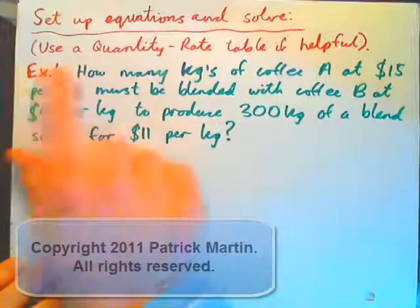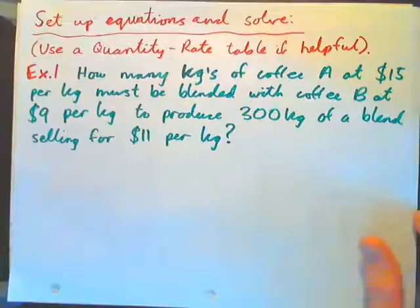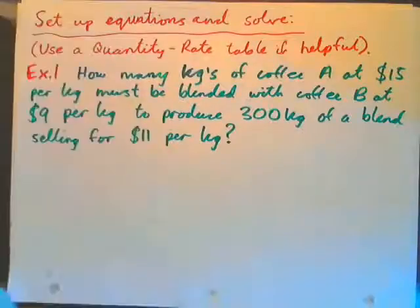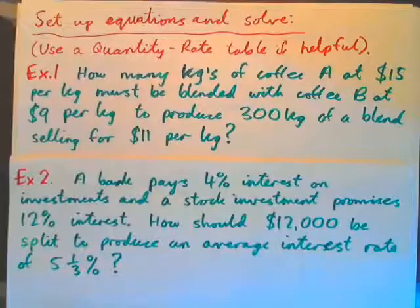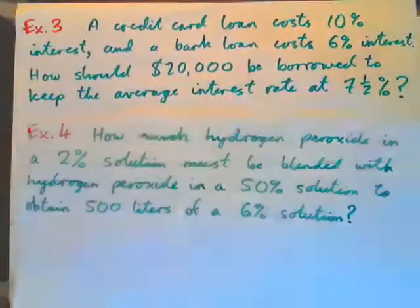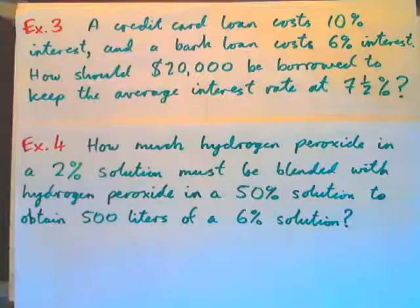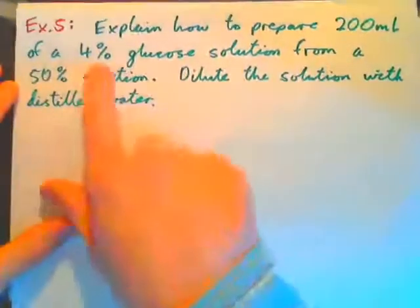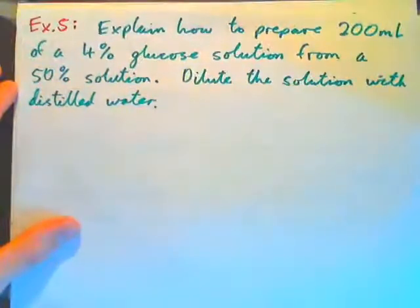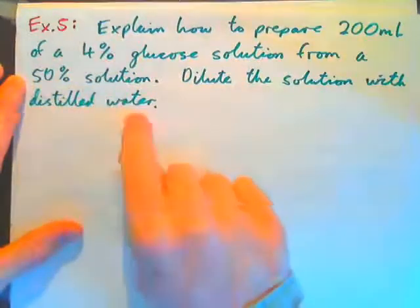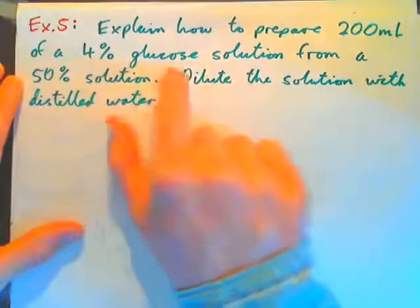Set up equations and solve using the quantity-rate table if helpful. I'm going to do five examples. Here's example one, and example two, example three, and four is hydrogen peroxide, and example five is going to be a 50% glucose solution mixed with water to produce a 4% glucose solution.